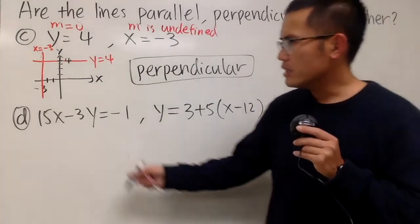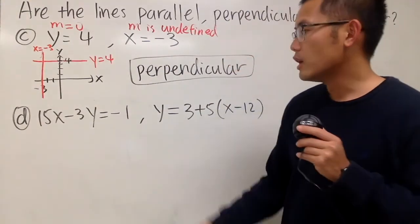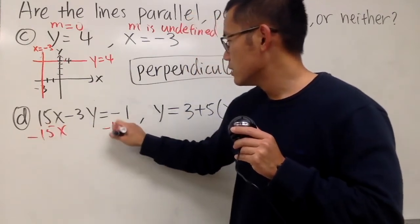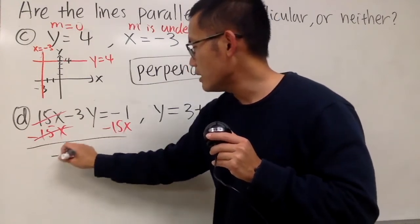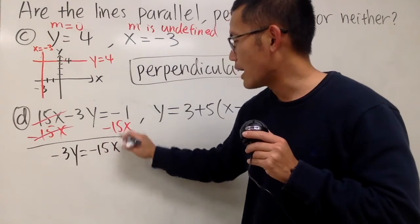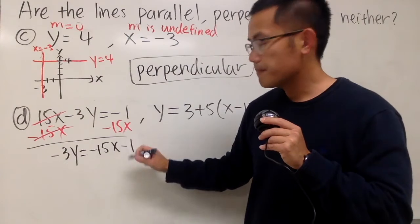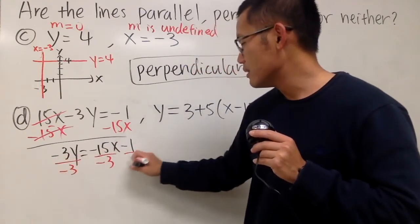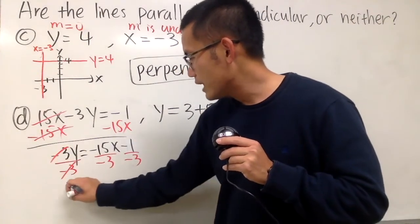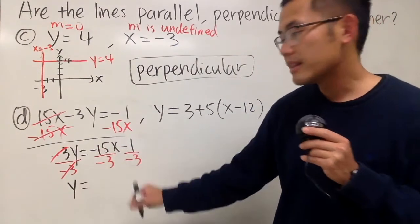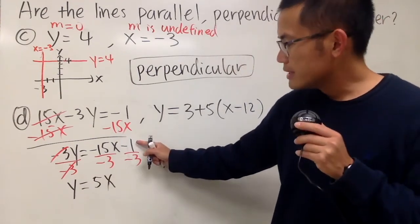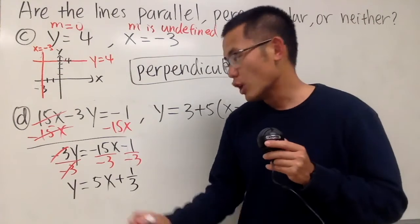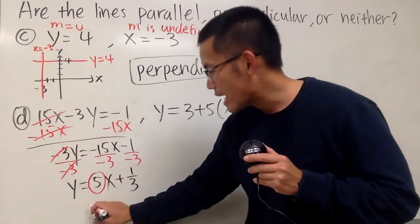Now we have another example. We can't see the slope right away, so we need to convert it to y equals mx plus b form. Subtract 15x from both sides, leaving negative 3y equals negative 15x minus 1. Then divide everybody by negative 3. We get y equals positive 5x plus 1 over 3. So the slope of this line is 5.